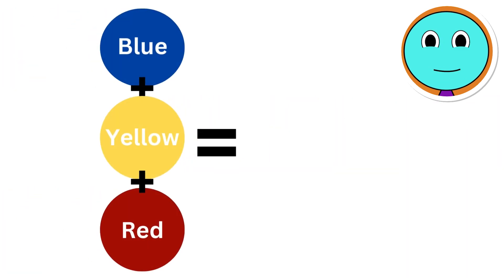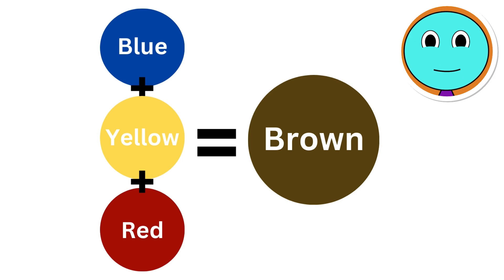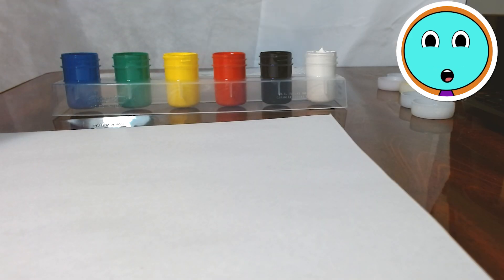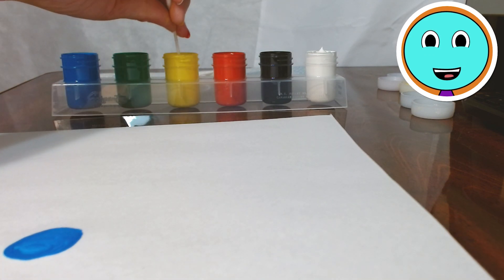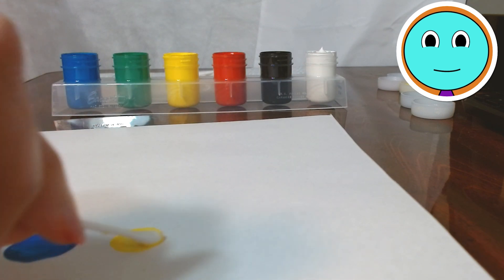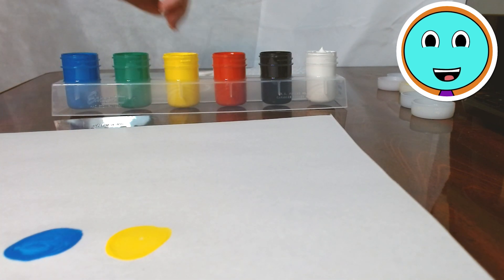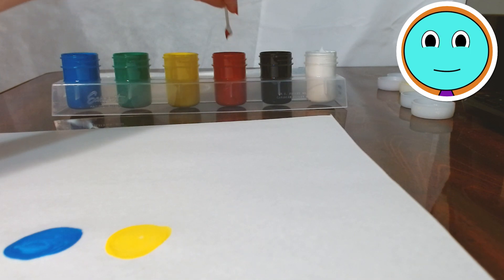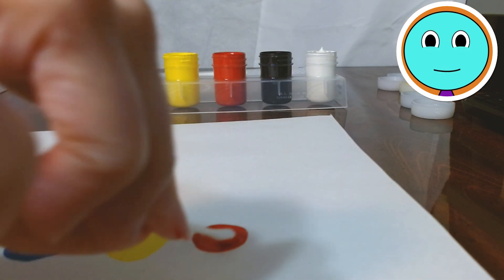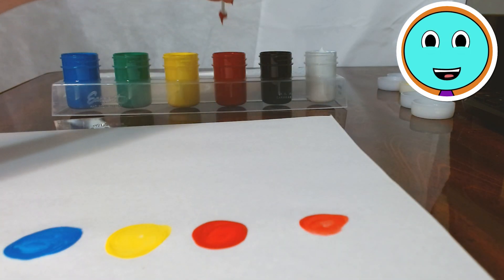Here's a good one. Blue plus yellow plus red. I wonder what color that makes. Do you know? Wow, brown! Let's see. She's going to mix the blue, the yellow, and the red. Does that really make brown? Let's find out.